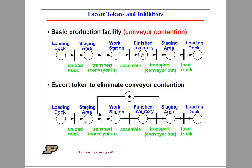That triggers a potential transition with the transport operation. This is the conveyor going out to a staging area. Then when it's there and a truck is available, we can actually load the truck and it goes out and leaves the loading dock.